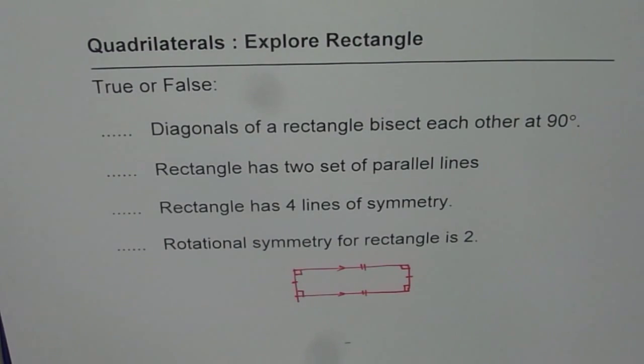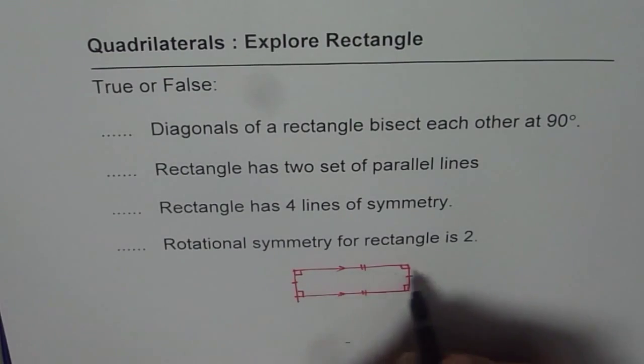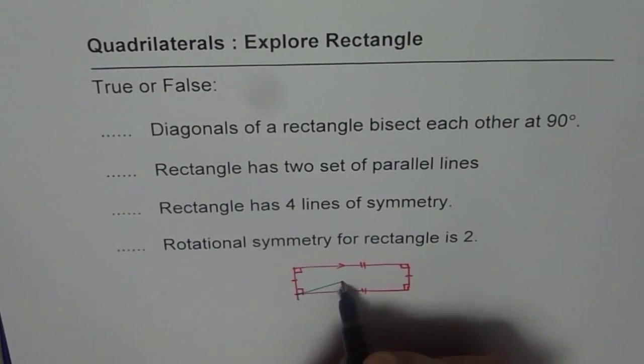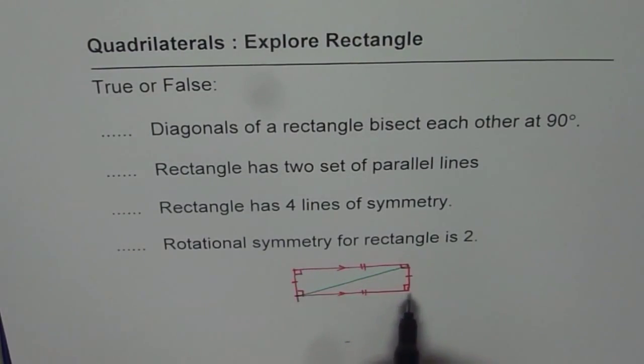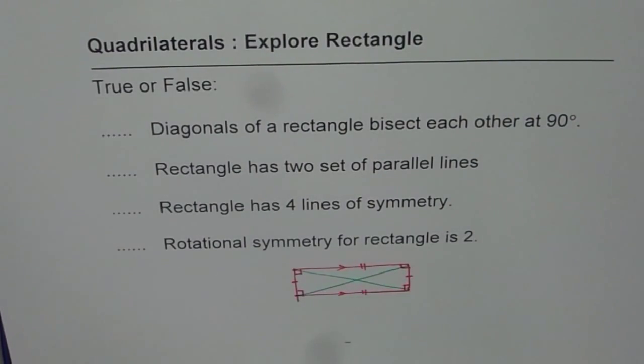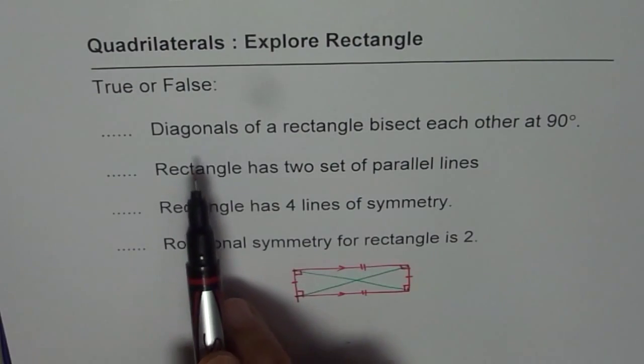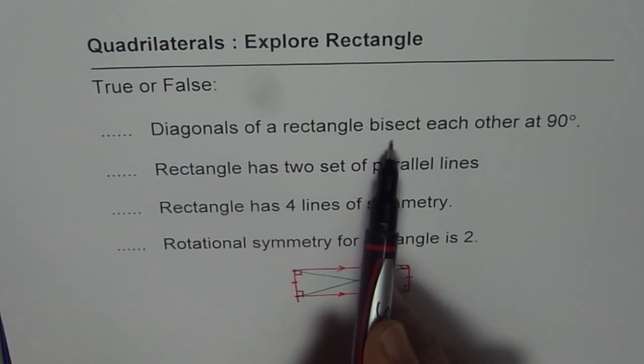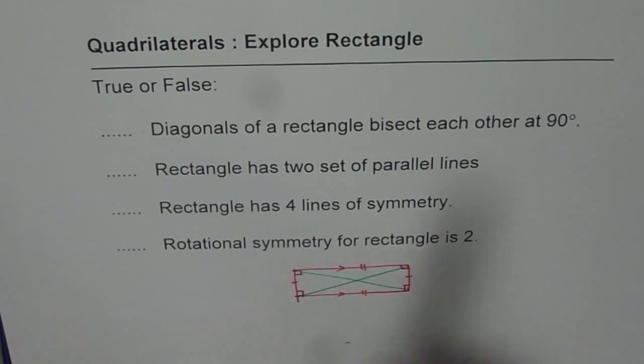Diagonals of a rectangle bisect each other at 90 degrees. Bisect means when I join these two sides, opposite sides, that is a diagonal. Now the other one, this is the other diagonal. Now the question is, diagonals of a rectangle bisect each other at 90 degrees.